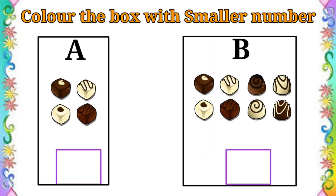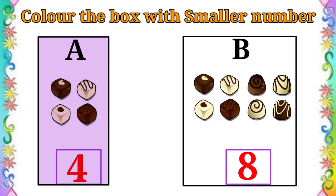Now we can see 2 sets of chocolates. Let's compare. A set has 4 chocolates. B set has 8 chocolates. Which one is the smaller number? A set of chocolates. Very good. So let's colour A set of chocolates.